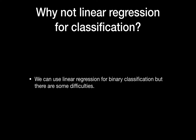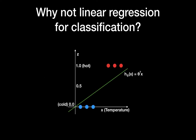So why not use linear regression for classification? We can actually use linear regression for binary classification, but there are some difficulties. You can see this green line which is the hypothesis h(X) = θᵀX. The threshold is 0.5, so if it's greater than 0.5 we say it's hot, and less than 0.5 we say it's cold. So you can use linear regression for classification using this kind of trick.